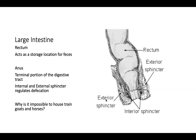The rectum acts as a storage location for feces. The anus is the terminal portion of the digestive tract, with an internal and external sphincter that regulates defecation. Dogs and cats can control their external sphincter, allowing house training. Horses and goats have less control over their sphincters and also have a constantly moving GI tract due to continuous food ingestion, so they defecate frequently with little control.